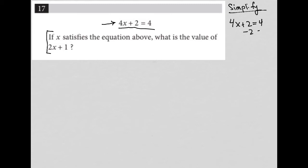So I can subtract 2 from both sides here. I'm left with 4x equals 2. I divide both sides by 4 here, and I'm left with x equals 1 half.